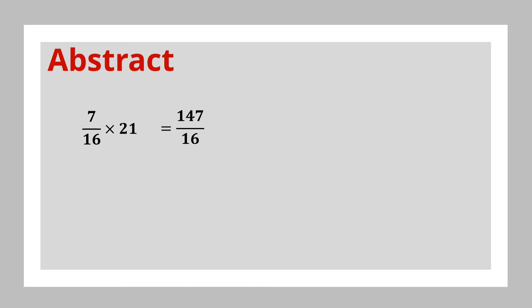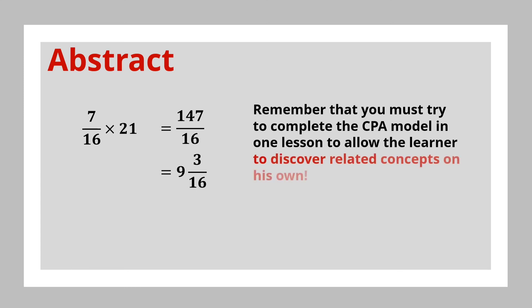The child would then convert this to a mixed number because it was in his schema. This would be your answer, nine and three-sixteenths. Remember that you must try to complete the CPA module in one lesson to allow the learner to discover related concepts on his own.